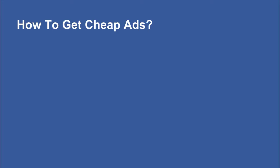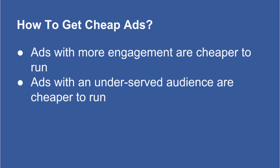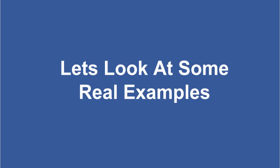You probably want to know how to get cheap ads. There are basically two things that determine your ad prices. First, ads with more engagement are cheaper to run — if your ad gets a lot of likes, shares, and clicks, Facebook rewards you with a lower ad rate. Second, ads targeting an underserved audience are also cheaper. If you're targeting the same people as all other advertisers, you're in an auction system and it goes to the highest bidder. But if you're going after an audience nobody else is running ads to, you tend to get much lower ad costs.